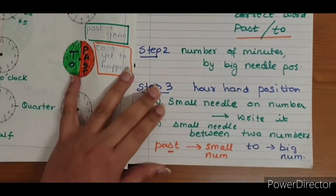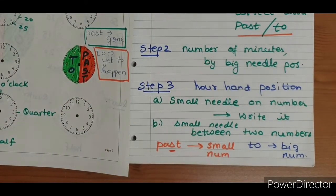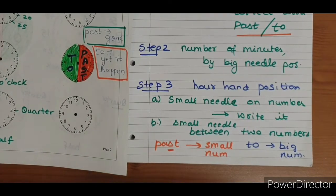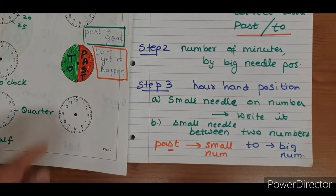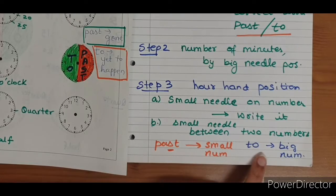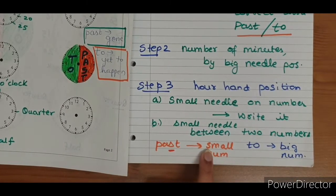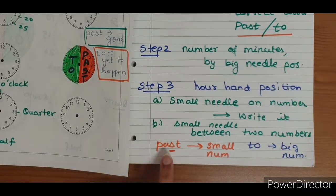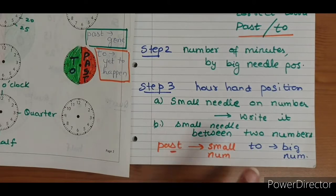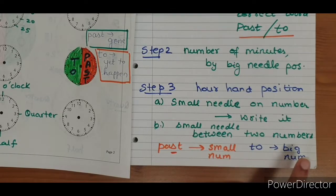If my small needle is in between two numbers, go back to your format and check: if you have written past, use the small number. If you have written to, use the big number. Notice — small number starts with S and past has S in common. Just remember it this way: past → small number, to → big number.